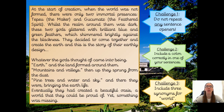'At the start of creation, when the world was not formed, there were only two immortal presences: Tepeu the maker and Gukumatz the feathered spirit. Whilst the realm around them was dark, these two gods glittered with brilliant blue and green feathers which shimmered brightly against the blackness. They decided to come together and create the earth, and this is the story of their earthly design. Whatever the gods thought of came into being — earth and the land formed around them, mountains and valleys. Then up they sprung from the dust: pine trees and water and sky, bringing the earth to life. Eventually they had created a beautiful oasis — a world they could be proud of — yet something was missing.'